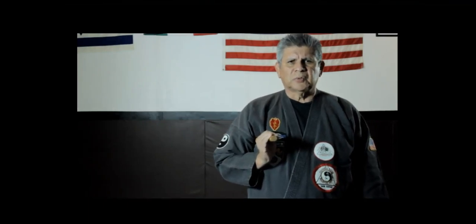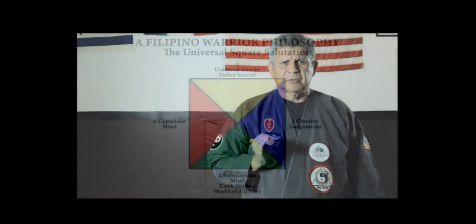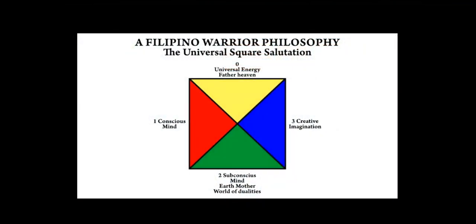Our presentation begins with the introduction of the Universal Square. It is the first structure that we present in our development under peacetime conditions. As we look at this chart, we see four triangles, and each represents a phase of our continual development as human beings.